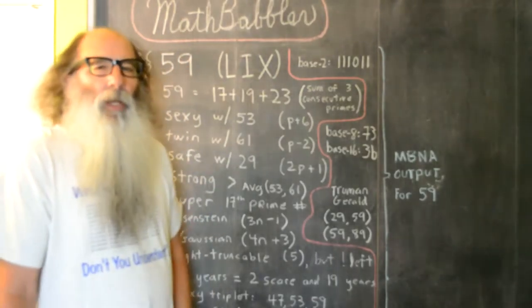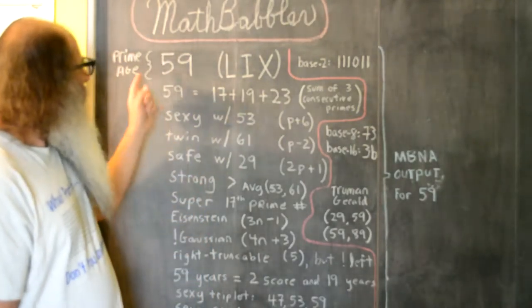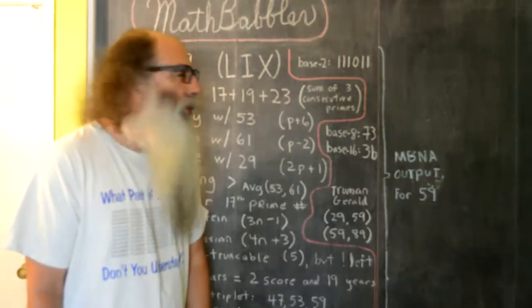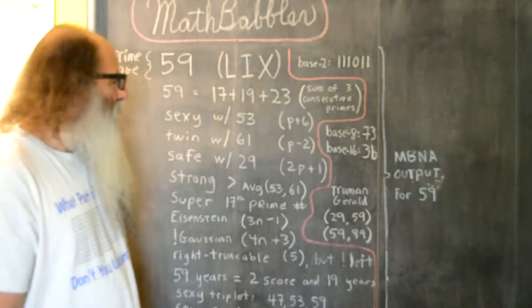Twin primes are prime numbers that differ by 2. Well, 59 plus 2 is 61, so 59 is a twin with 61.